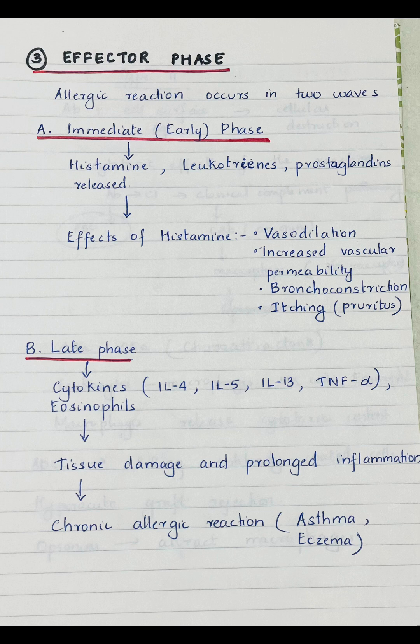The late phase occurs 4 to 6 hours after exposure to the allergen and can last up to 24 hours. During this phase, mast cells and basophils release cytokines such as interleukin-4, interleukin-5, interleukin-13, and tumor necrosis factor alpha. Eosinophils also play an important role in this phase; they are recruited to the site and cause tissue damage and prolonged inflammation. This phase results in chronic allergic reactions like asthma and eczema.